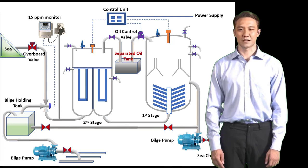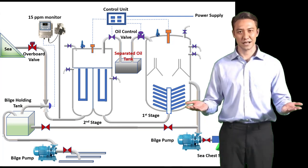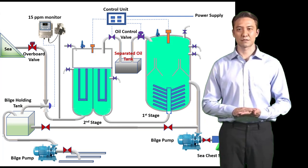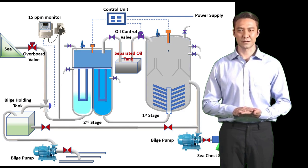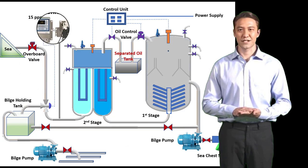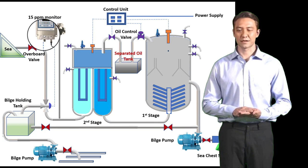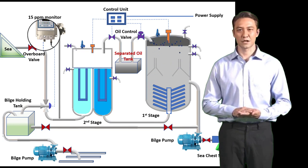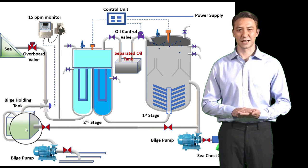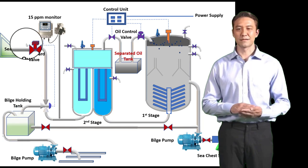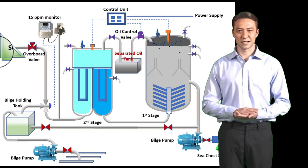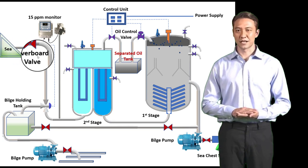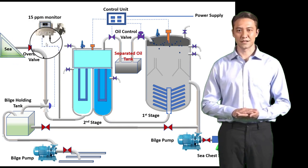Lastly, the coalescer filter sends the remaining water where it is directed to the overboard valve. This flow and sample are monitored by the 15 ppm bilge monitor control sensor. If more than 15 ppm is measured, the control signals the return valve to open to the bilge holding tank and closes the overboard valve. Hence, the system is now in a looping cycle. The overboard valve may open again when the ppm goes down below 15.